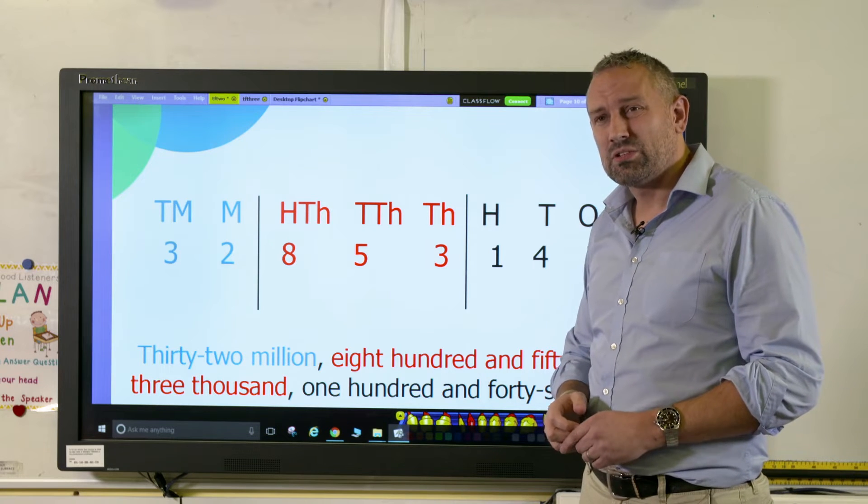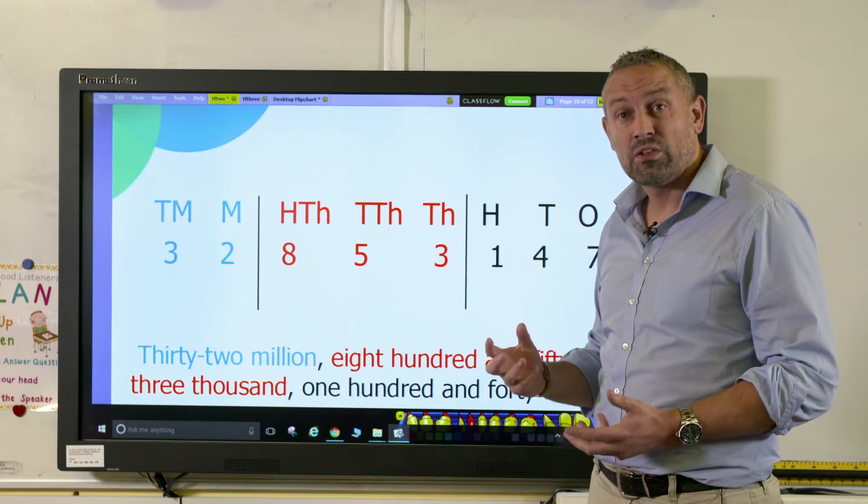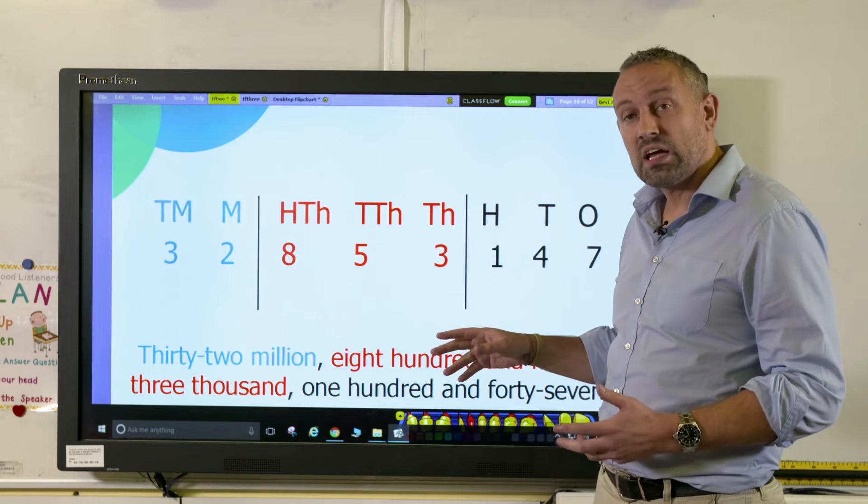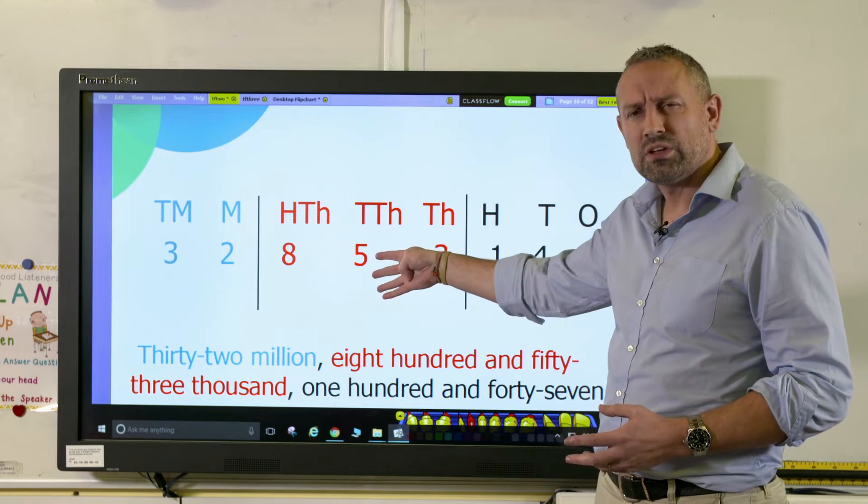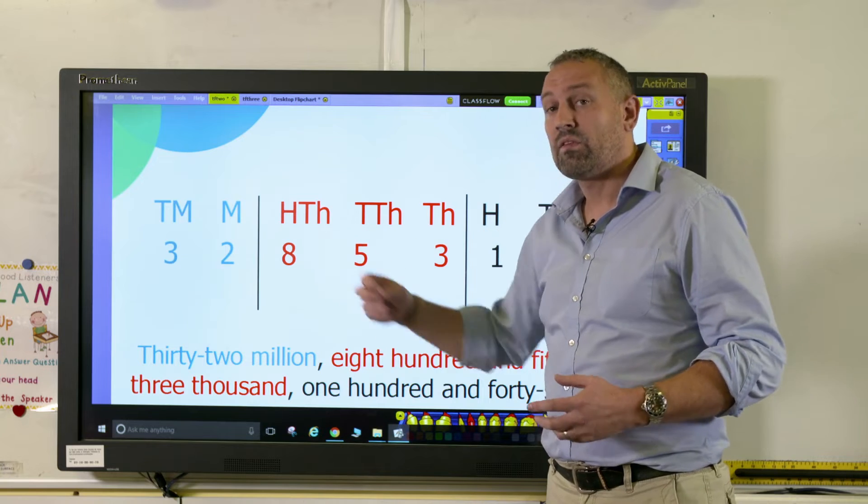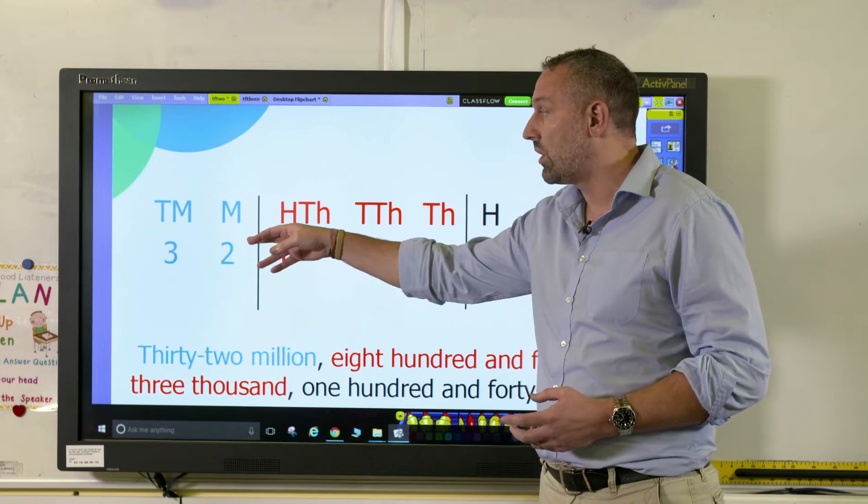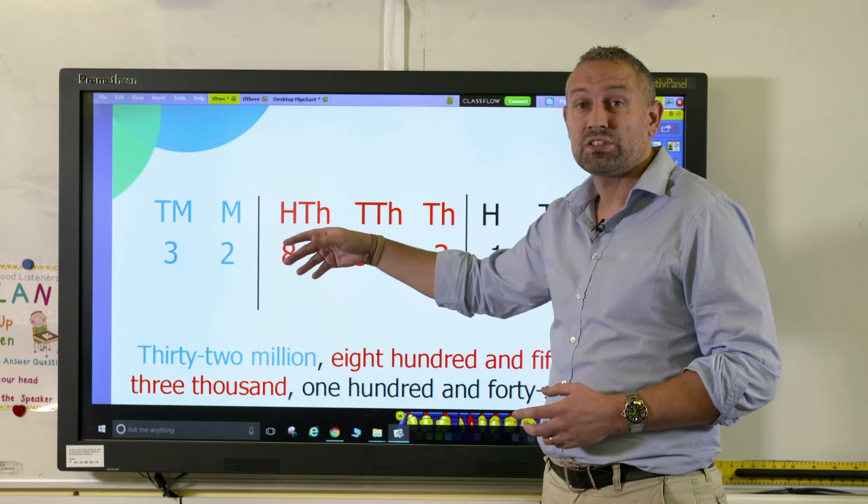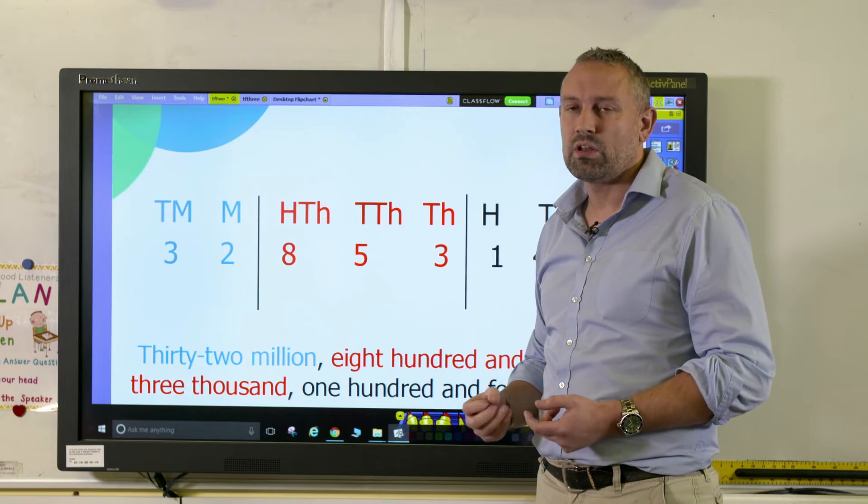To really elicit the children's learnings and to make sure that they know what's going on, it'd be good if you could say to them, 'What is the value of the digit five there?' or 'What is the value of the digit three there?' And if they can turn around and say that that three is worth 30 million or three lots of ten millions, it shows that they really understand it.